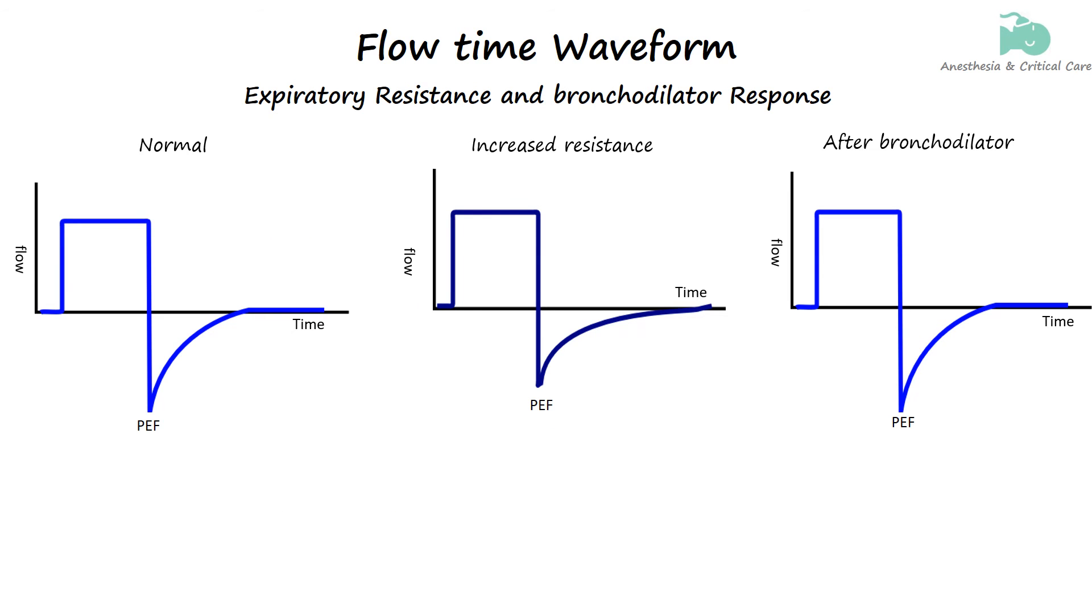In mechanical ventilation, recognizing expiratory resistance on a flow-time waveform involves analyzing the waveform during the expiratory phase to identify signs of increased resistance. A normal waveform exhibits a smooth continuous drop in expiratory flow. When there is increased expiratory resistance, the waveform generated will have low peak expiratory flow and the flow curve returns to baseline more slowly.